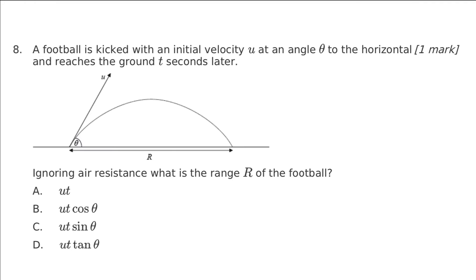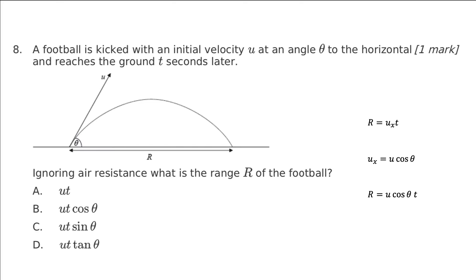The last three are all proof questions, which are really nice and don't require any calculations. We're asked for the range of the football — the distance traveled in the x-direction. With zero air resistance, we calculate the range by multiplying time by the x-component of velocity. The x-component is u cosθ, building our right-angled triangle with the adjacent over hypotenuse. Substituting in, R = u cosθ × t, hence answer B.